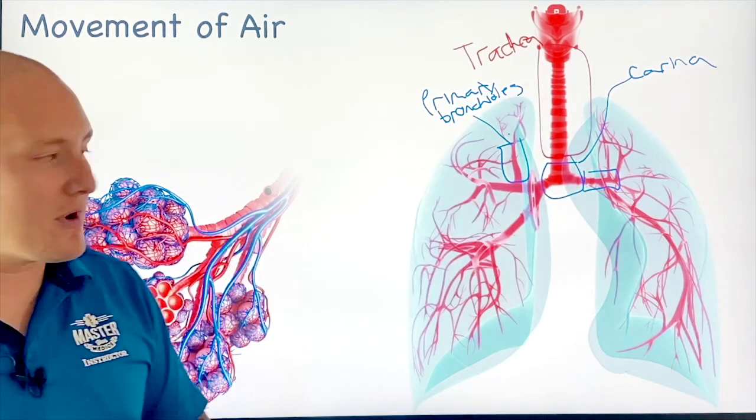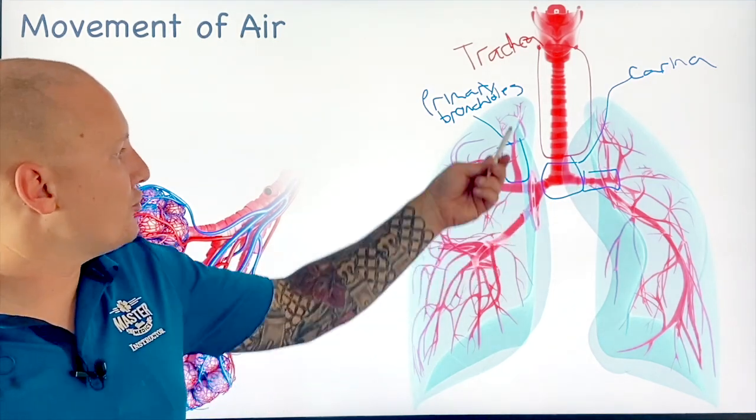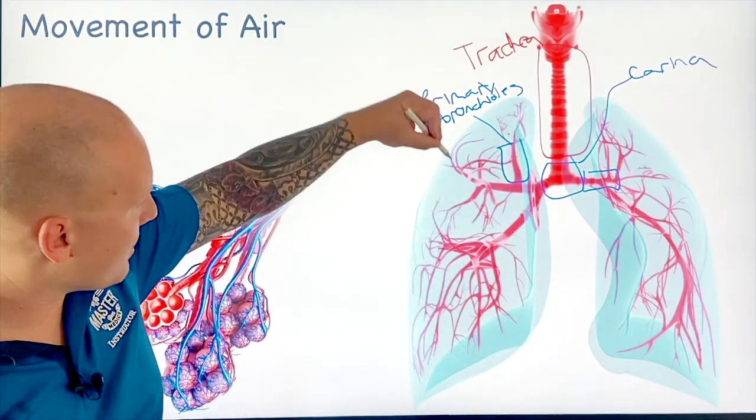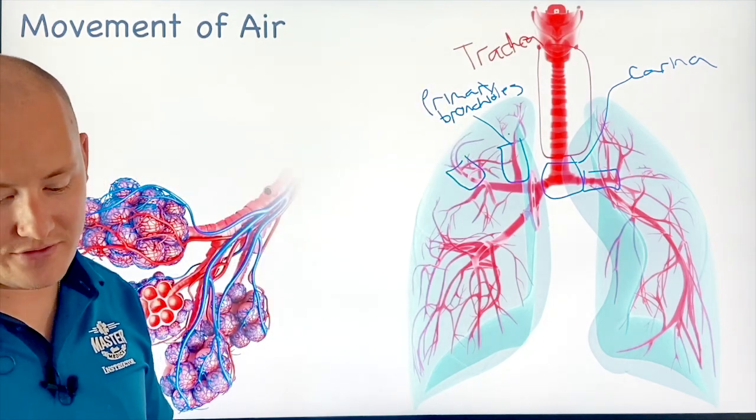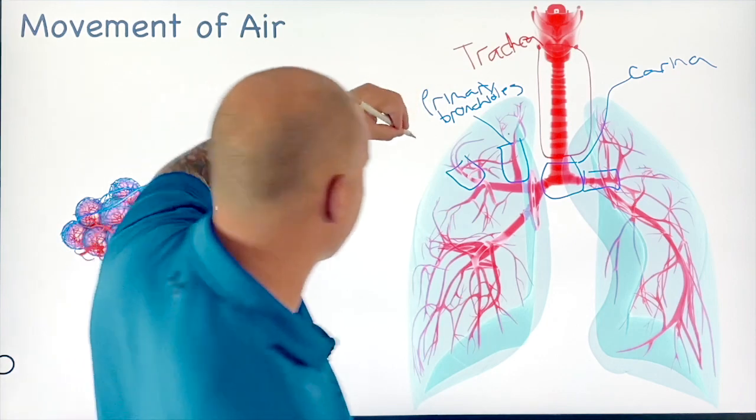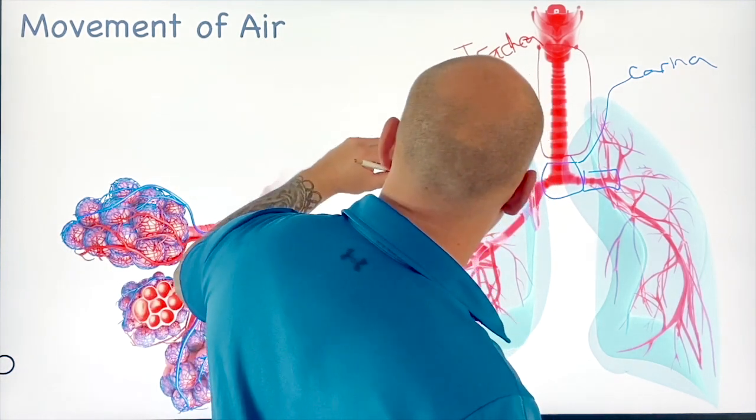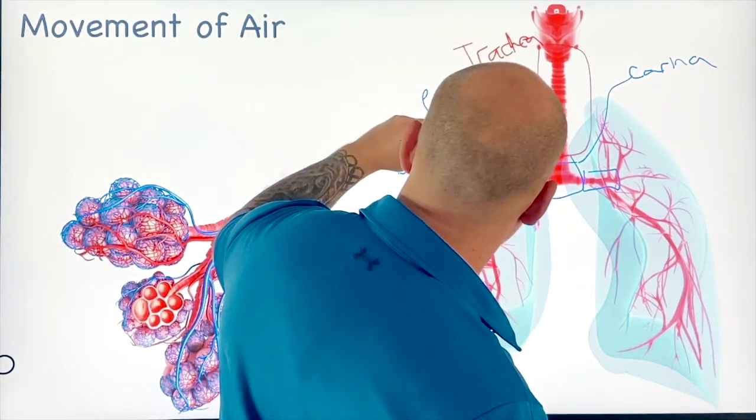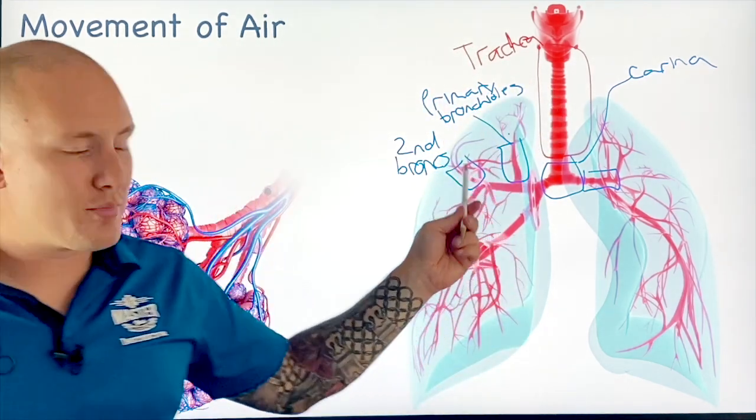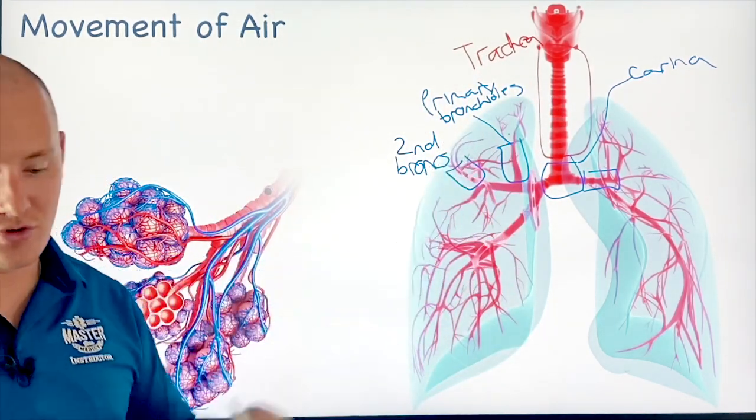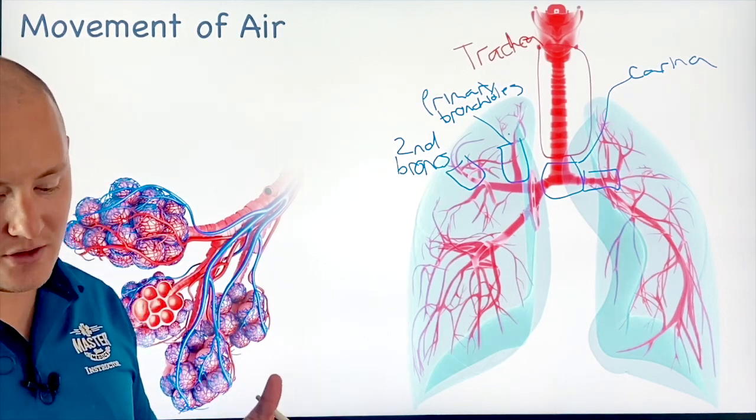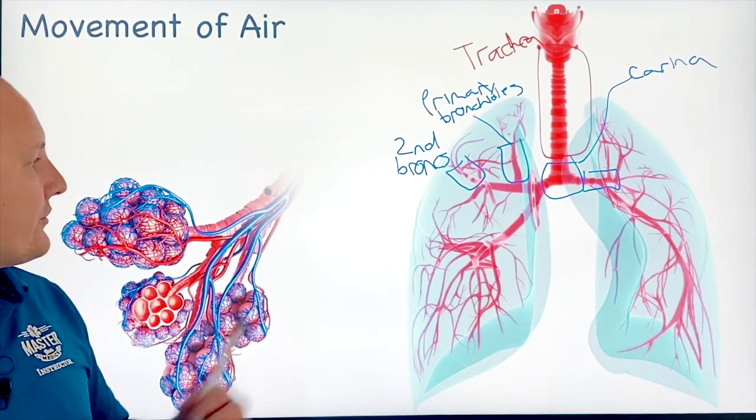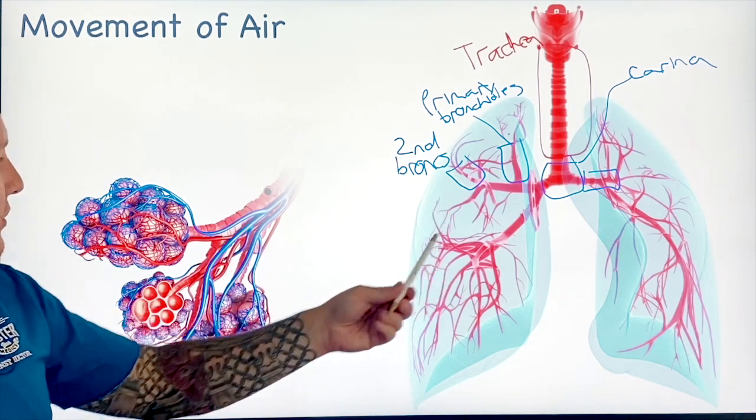Those primary bronchioles are allowed to go to smaller bronchioles, and these smaller bronchioles, as you're probably going to guess, these are your secondary broncs. And those secondary broncs are going to finally go to your tertiary broncs and so forth, and it's finally going to get to your bronchioles. And those bronchioles are going to finally lead to the actual functional part of your lung, which is the alveoli.